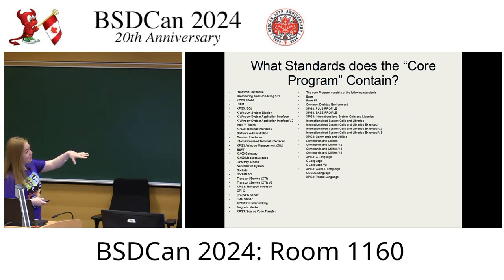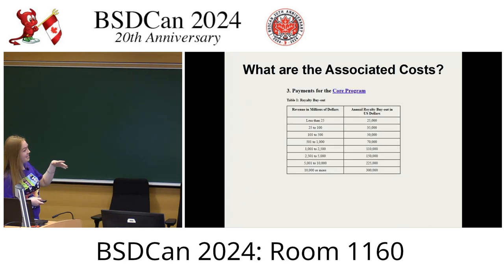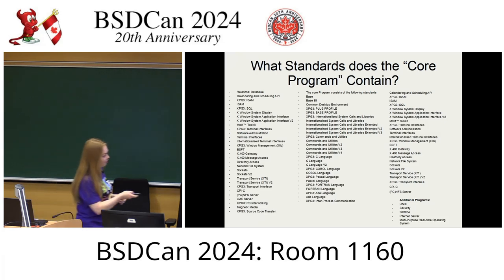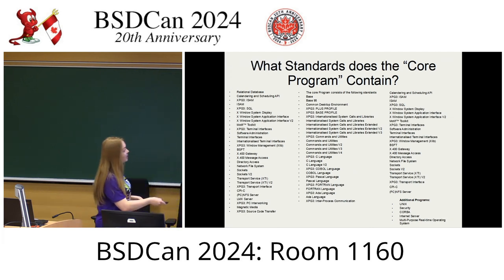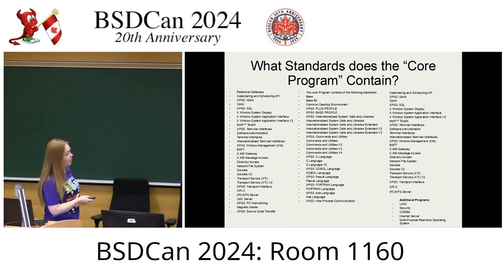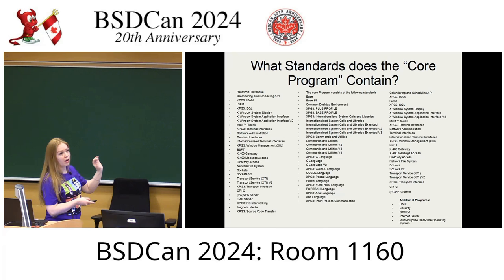These are all the standards in the core program of POSIX — it's a lot. The additional programs are where we actually find Unix, so Unix isn't part of the core program. We can see some of these standards are for the C language, and there's even COBOL in there — it's quite a medley. These would not be part of the core program of POSIX.